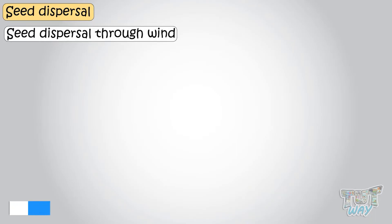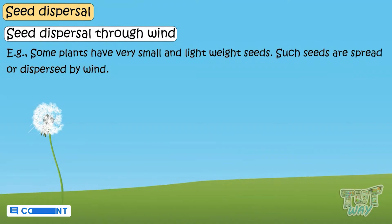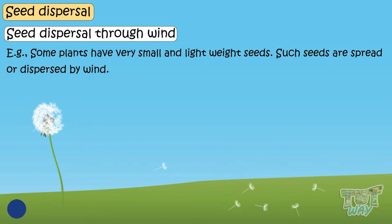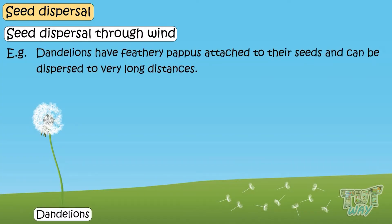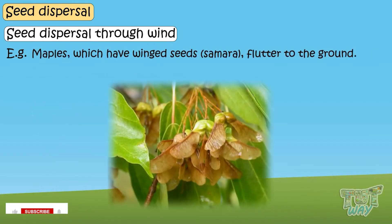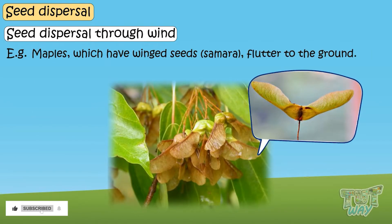Wind: some plants have very small and lightweight seeds. Such seeds are dispersed by wind and fly away to distant places. Seeds can float on the breeze or flutter to the ground. Classic examples include dandelions, which have feathery pappas attached to their seeds so they can disperse to very long distances.